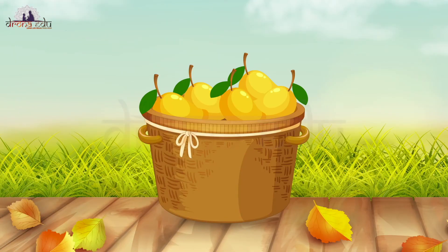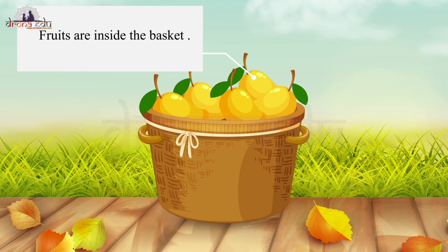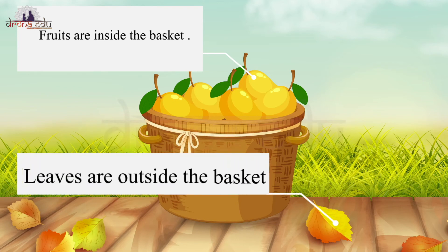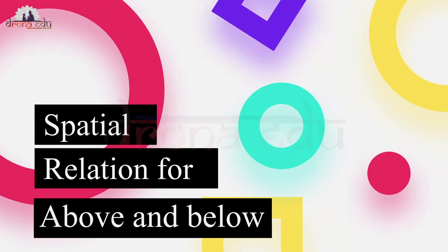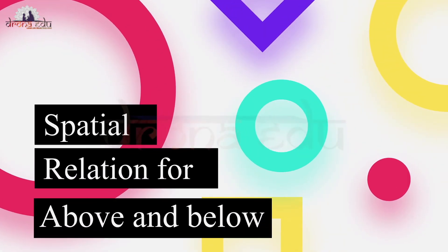Now similarly, let's see the spatial relation for inside and outside. Look at this picture — the fruits are inside the basket and the leaves are outside the basket.